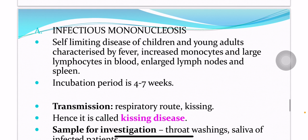Infectious mononucleosis is a self-limiting disease of children and young adults, characterized by fever, increased monocytes and large lymphocytes in the blood, and enlarged lymph nodes and spleen. The incubation period is 4 to 7 weeks.